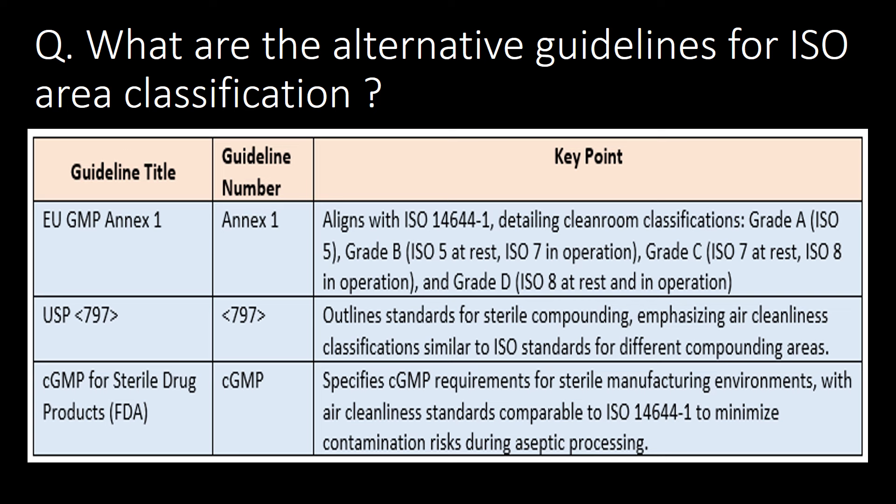What are the alternative guidelines for ISO area classification? EU GMP Annex 1, USP Chapter No. 797, and CGMP for sterile drug products from FDA are the important alternative guidelines for ISO area classification. Although the recommendations given for area classification in all three guidelines are comparable with or in line with ISO recommendations.